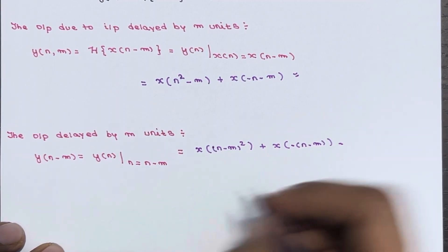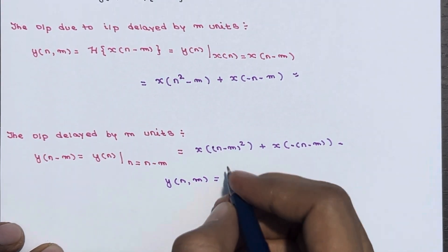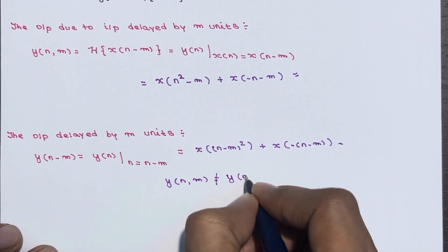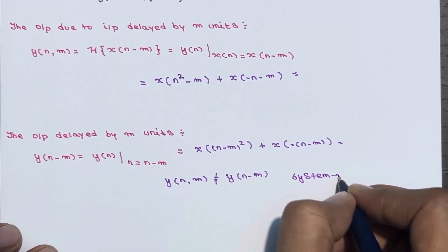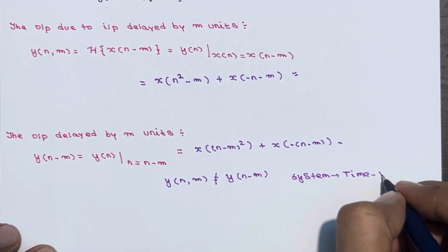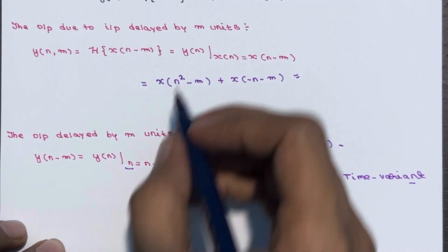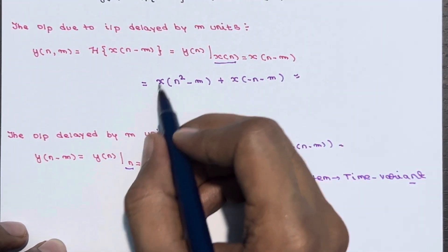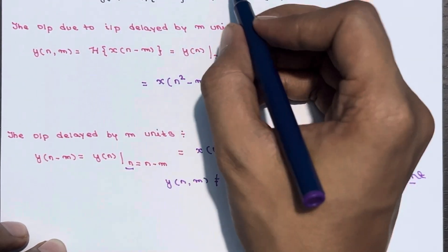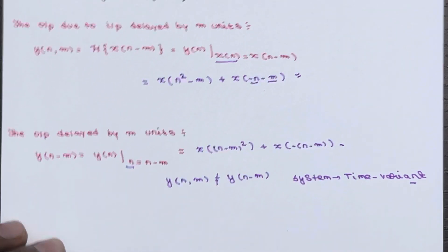Comparing these two expressions, they are not equal. So the system is time variant. To summarize: when x of n is present directly, replace it with x of n minus m; so x of n squared becomes x of n squared minus m, and x of minus n becomes x of minus n minus m.